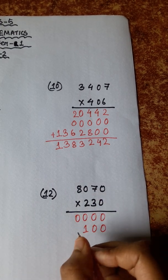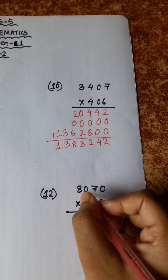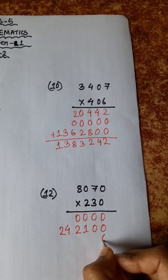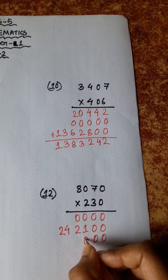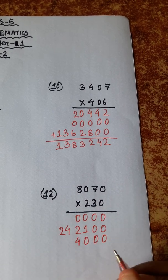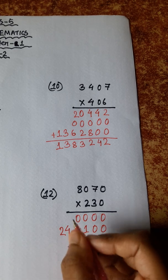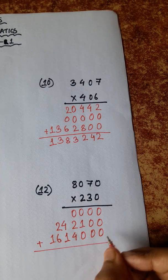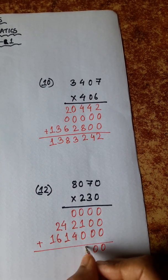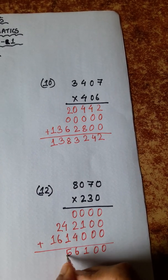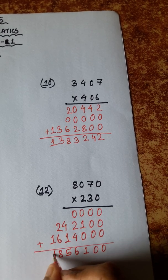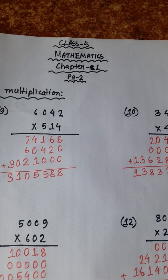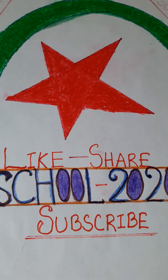3 zeros are zero, plus 2 is 2. 8 threes are 24. 2 zeros are zero. 7 twos are 14, carry 1. 2 zeros are zero, plus 1 is 1. 8 twos are 16. 4 plus 2 is 6. 4 plus 1 is 5. 6 plus 2 is 8 and 1.